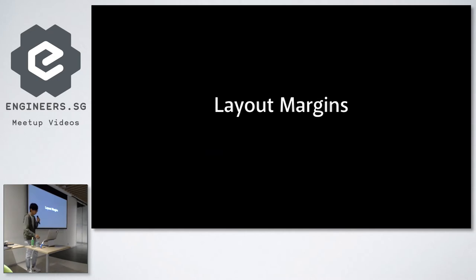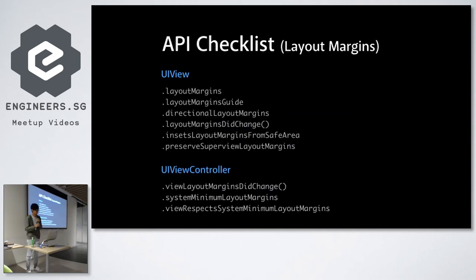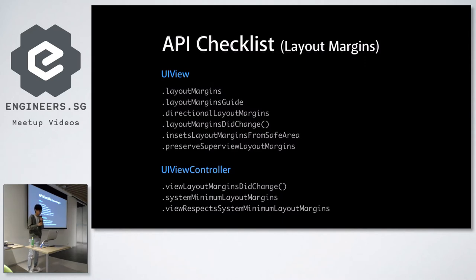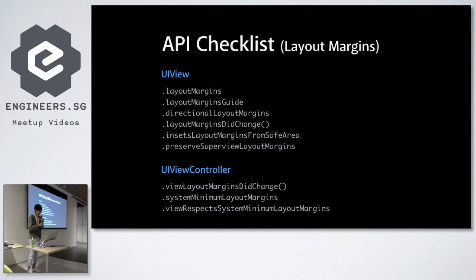So let's talk about layout margins. For the API checklist, there are six APIs under UIView related to layout margins. Four of them we may already be familiar with: layoutMargins, layoutMarginsGuide, directionalLayoutMargins, and layoutMarginsDidChange. And there are two we might be less familiar with: insetsLayoutMarginsFromSafeArea and preservesSuperviewLayoutMargins. For UIViewController, we have the viewLayoutMarginsDidChange callback method, and two methods related to the system minimum layout margins.